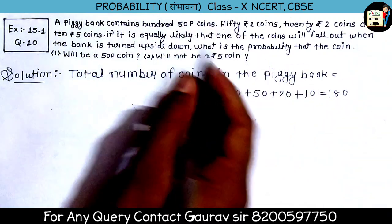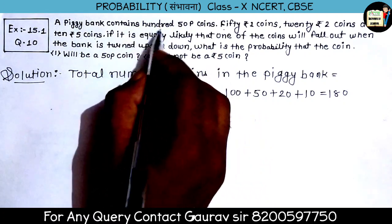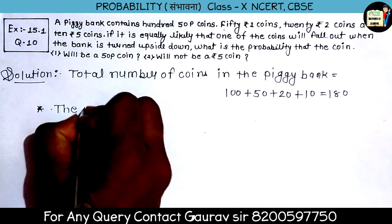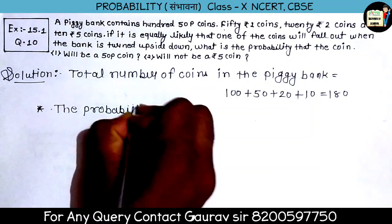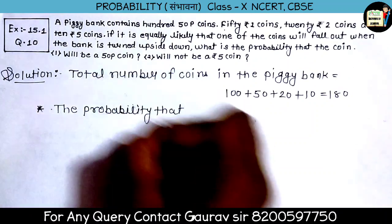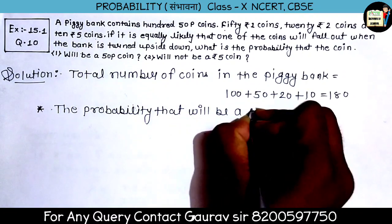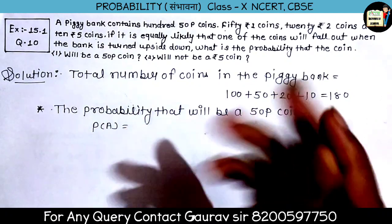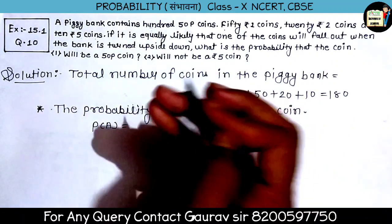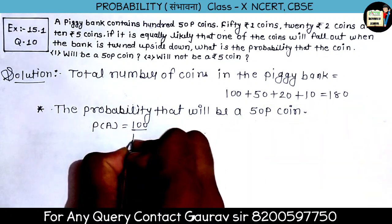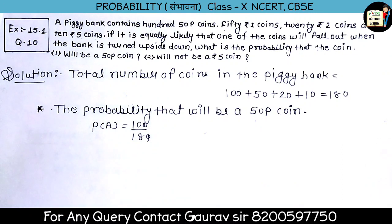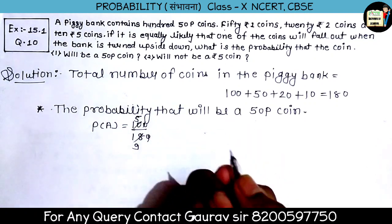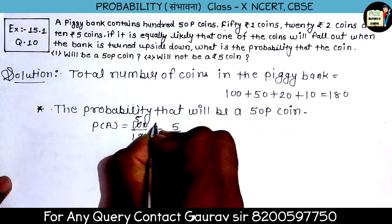The probability that it will be a 50-paise coin: P(A) = 100 upon 180. Cancel the tens: 100/180 simplifies. 10 goes into 100 five times, and 10 goes into 180 eighteen times, so after cancelling, 18 goes into 10... we get 5 upon 9. Understand?